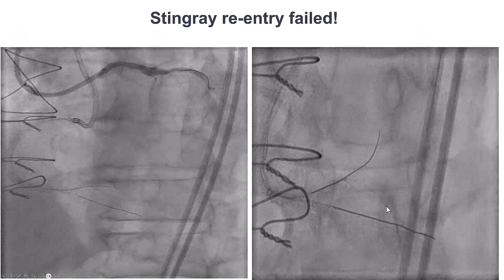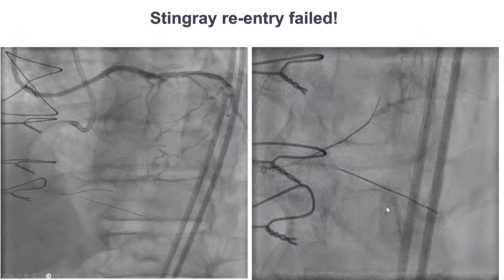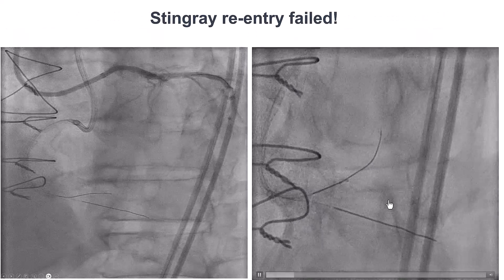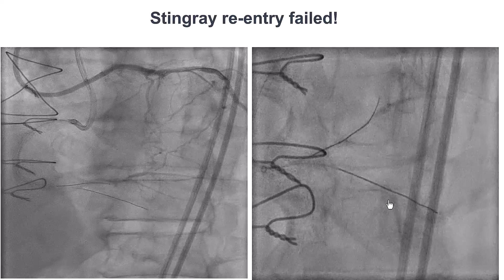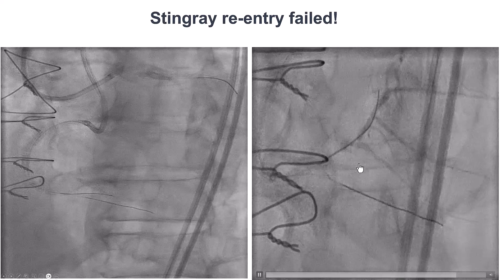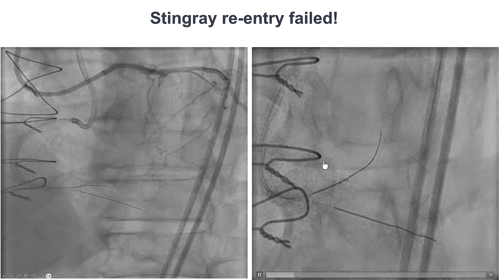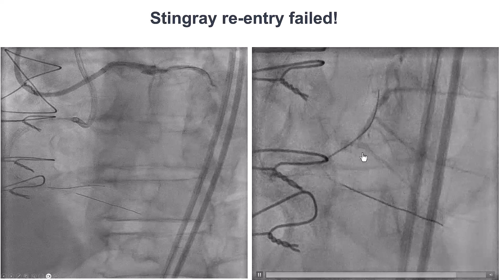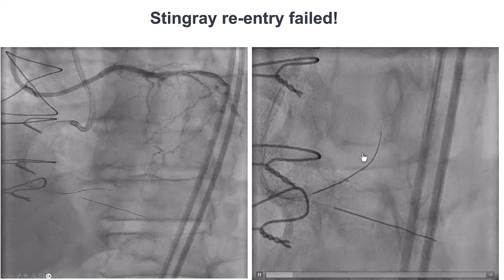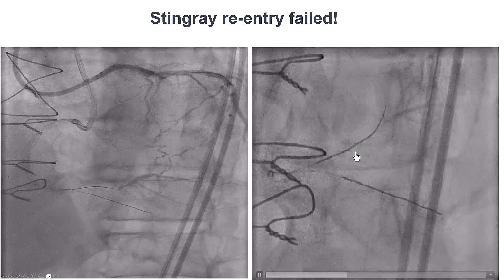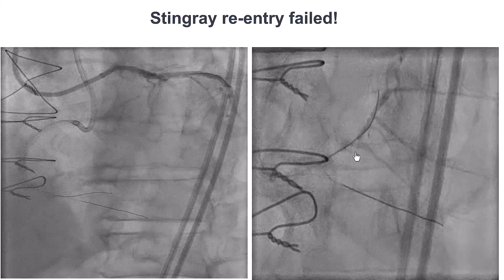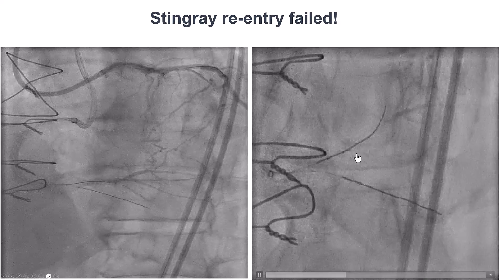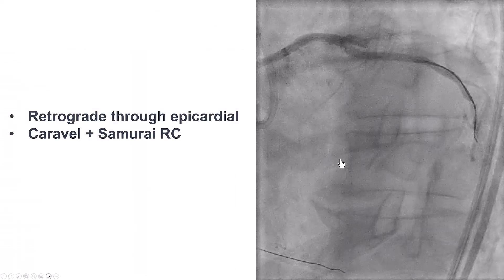Given the potential risks with retrograde crossing through epicardial collaterals, we decided to try ADR. We used a Stingray balloon, but unfortunately, despite using the stick-and-swap, double-blind stick-and-swap, and the bobsled technique, we were unable to cross into the distal true lumen.